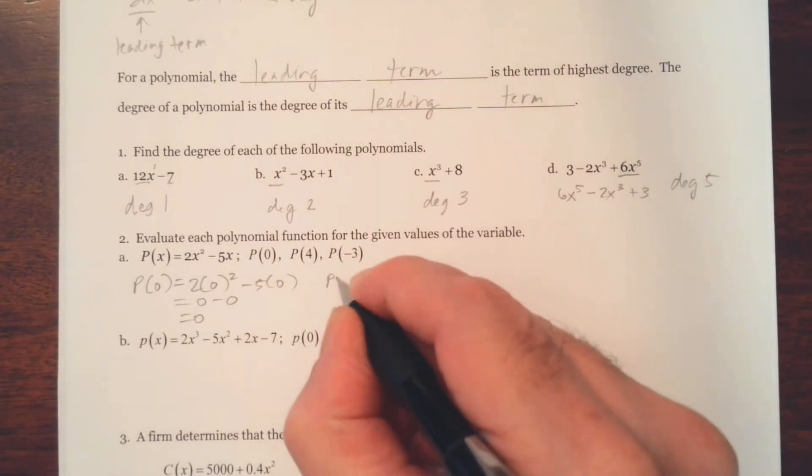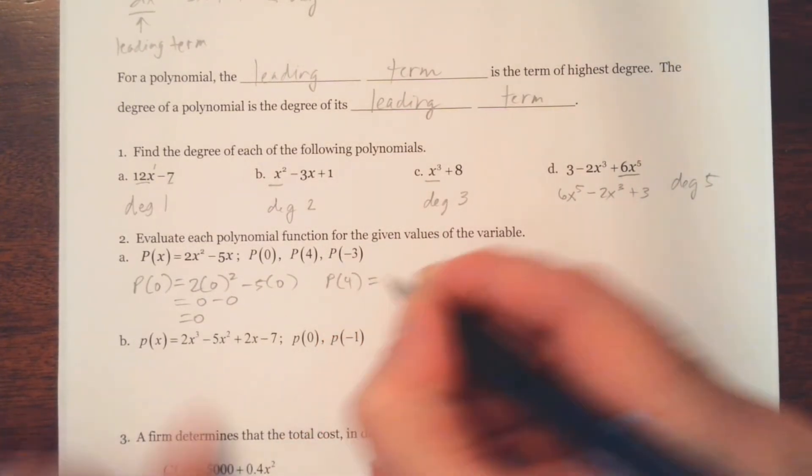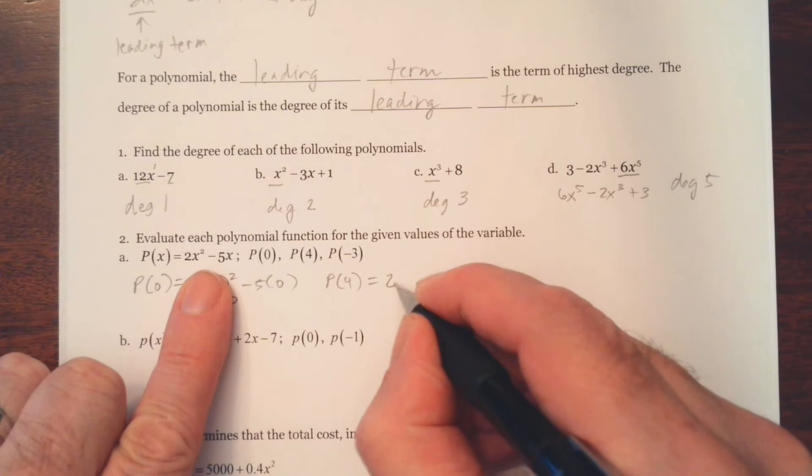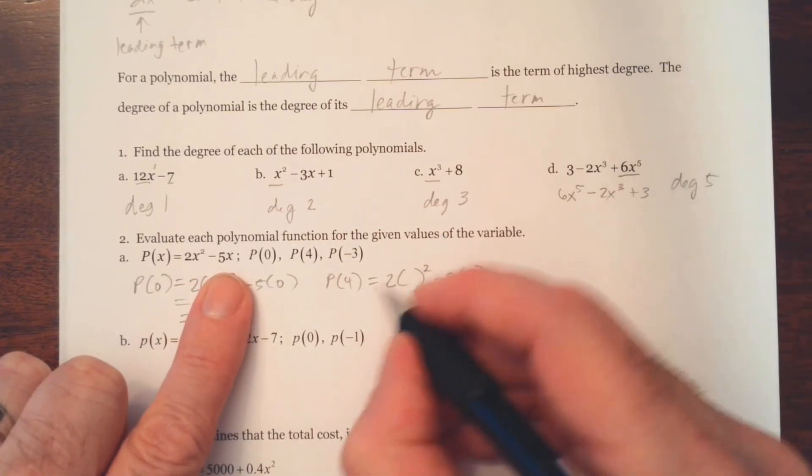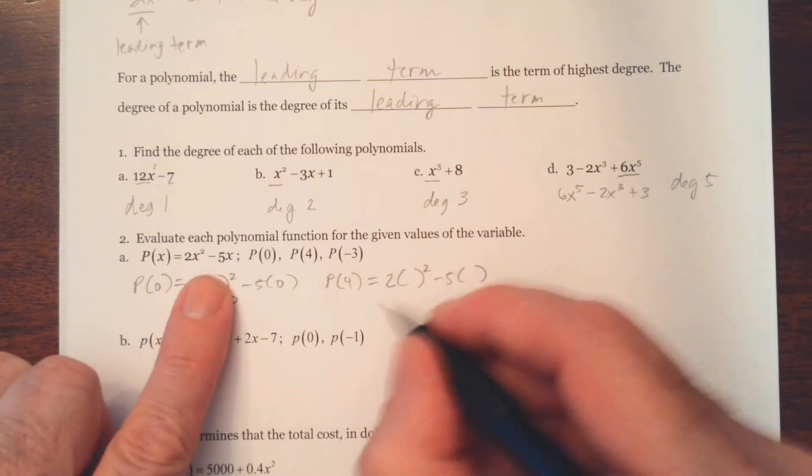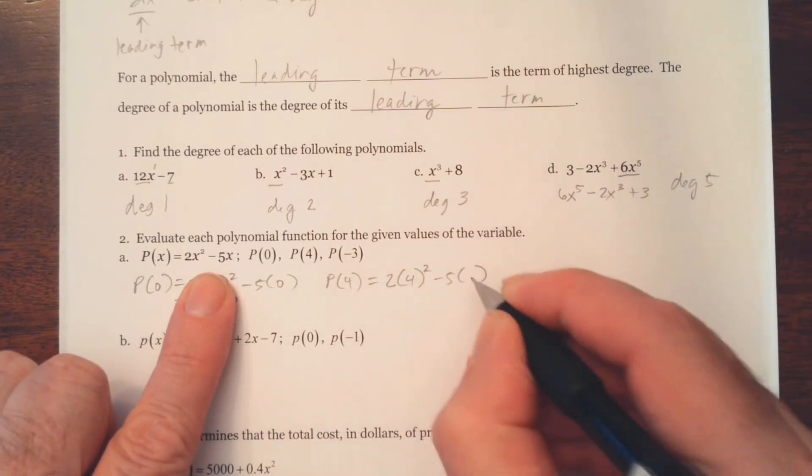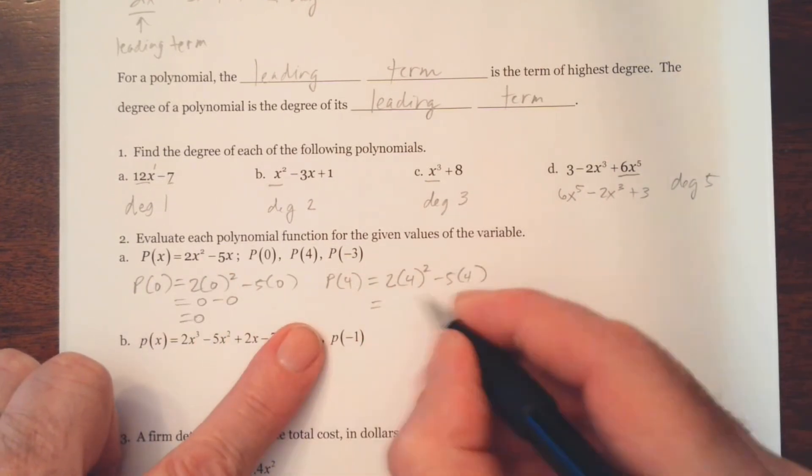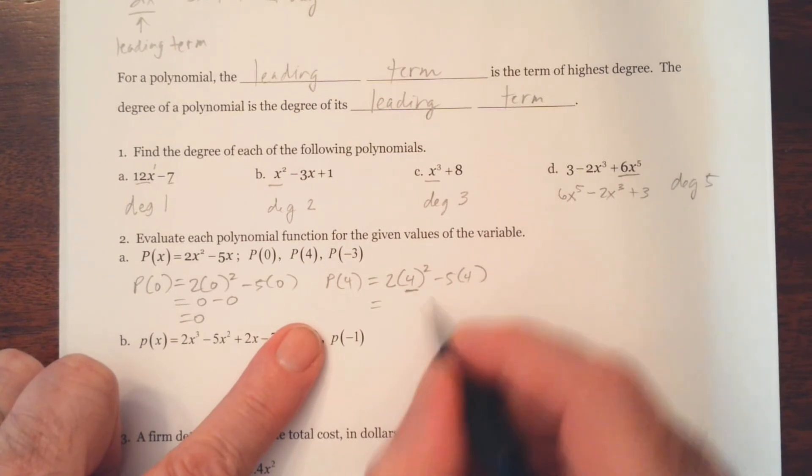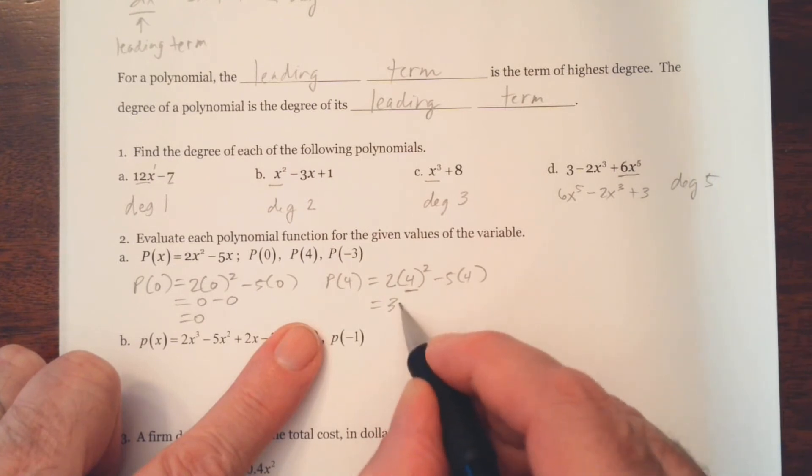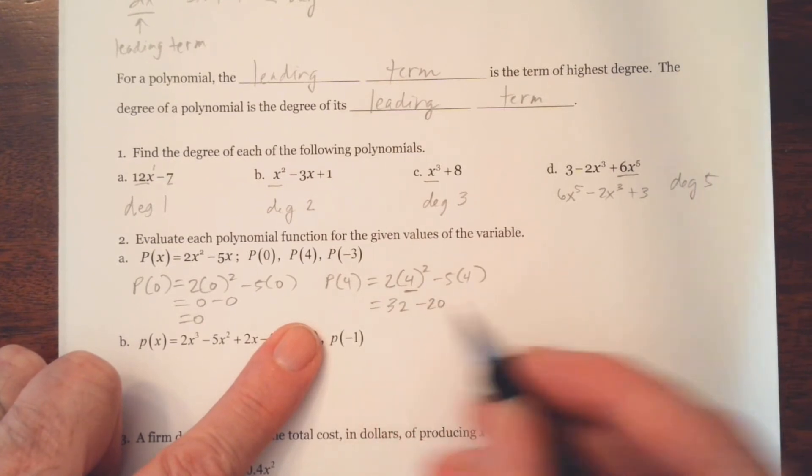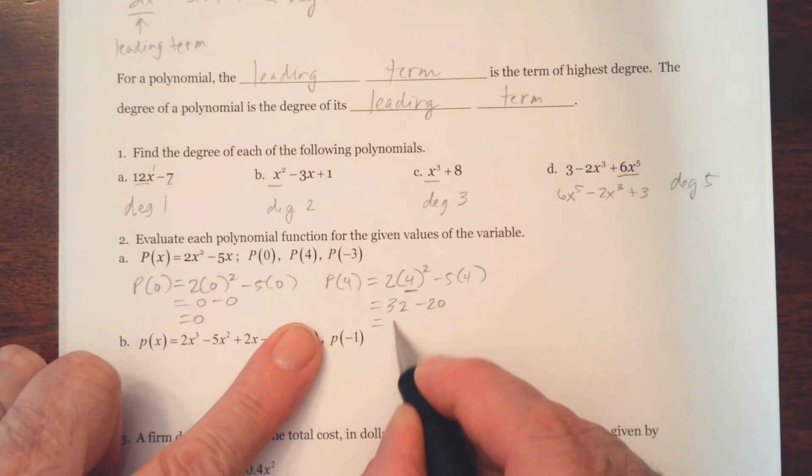And so this is 0 minus 0, which of course is 0. p of 4. So again, let's go ahead and make a shell or a skeleton for the function. And we're replacing the x's with 4. So this is going to be... Now be careful here. You've got to square the 4 first using the order of operations. So 4 squared is 16 times 2 is 32 minus 20. So we're going to get 12.